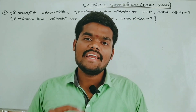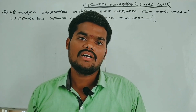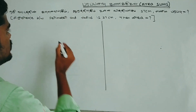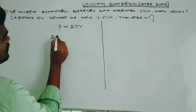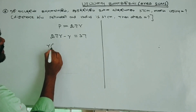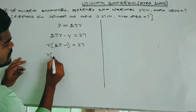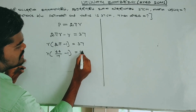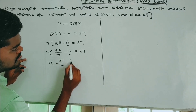Next problem: the difference of the circumference and the radius of a circle is 37 cm. The circumference is 2πr, so 2πr minus r equals 37 cm. Taking r common: r(2π − 1) = 37. Substituting π = 22/7, we get r × (44/7 − 1) = 37. Cross multiplying: 44 minus 7 over 7, so 37r/7 = 37.